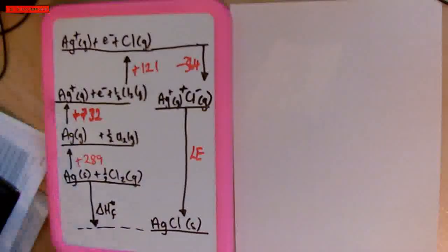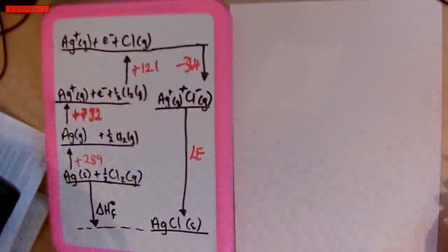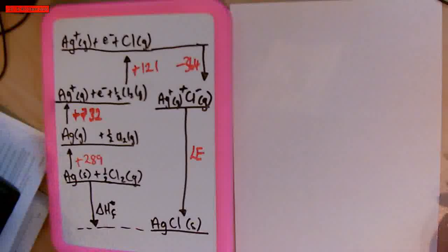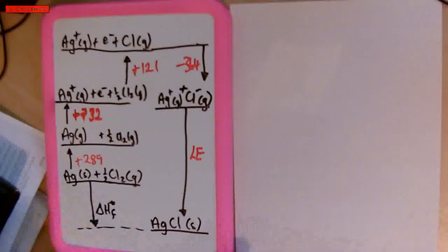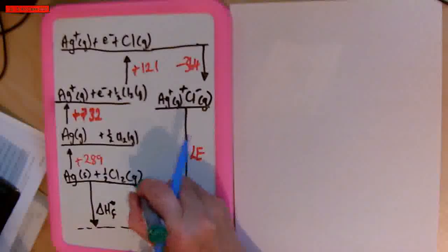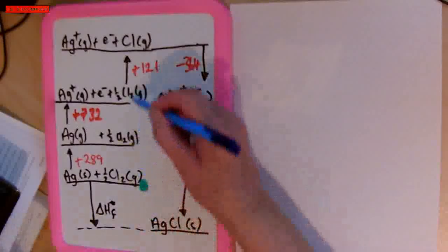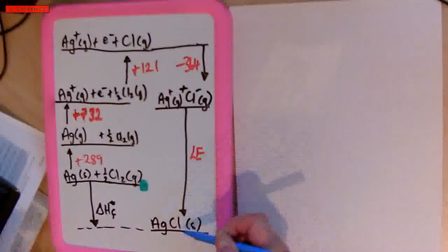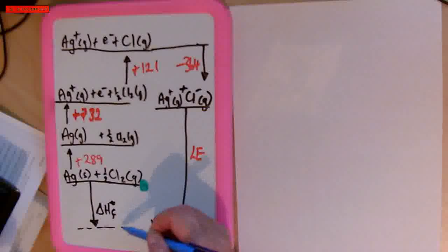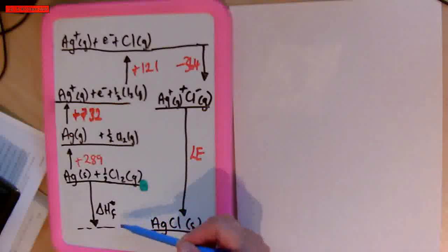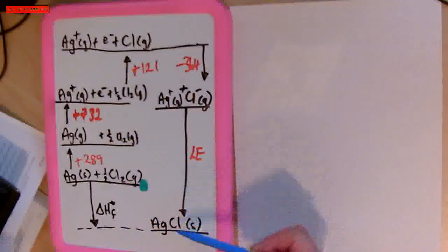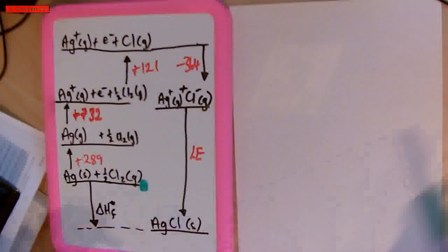I'm going to use the principles you've learned in Hess's Law and conservation of energy — the first law of thermodynamics. It doesn't matter the journey or the route that I take; the energy will be conserved. So if I start at this point here and follow the arrows around, I can get all the way around and down — and it's the same as going directly from here to here.